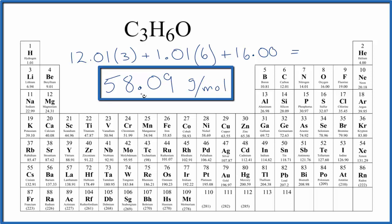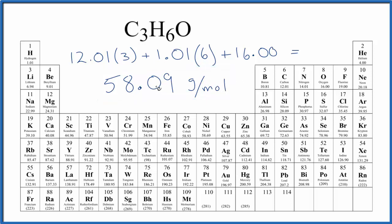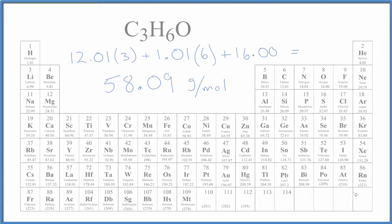What that means is that one mole of acetone is going to be 58.09 grams, or if I had 58.09 grams of acetone, that would be one mole. This is Dr. B with the molar mass for C3H6O, acetone. Thanks for watching.